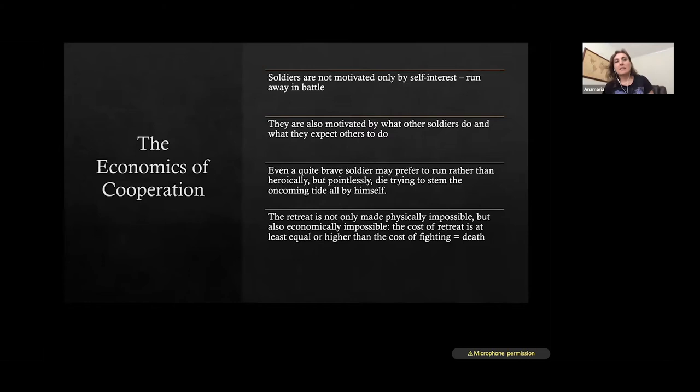So how does this play in this idea of cooperation and competition in biological systems? In this example, the soldiers were not motivated only by self-interest, basically to run away in battle. They were also motivated by what other soldiers do and what they expect others to do. So that is collective behavior. And even a quite brave soldier may prefer to run rather than heroically but pointlessly die trying to stand the oncoming target by himself. And the retreat is not only made physically impossible, but also economically impossible. So if we are thinking in terms of game theory, the cost of the retreat is at least equal or higher than the cost of fighting, which is the cost of fighting being equal to death.